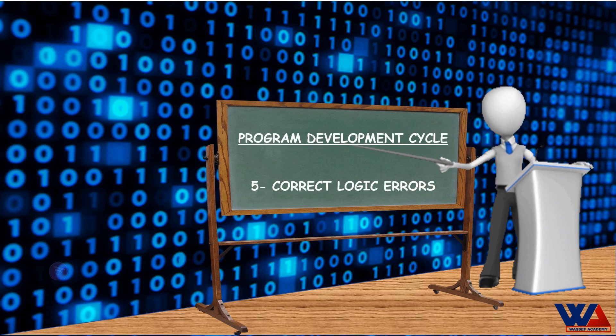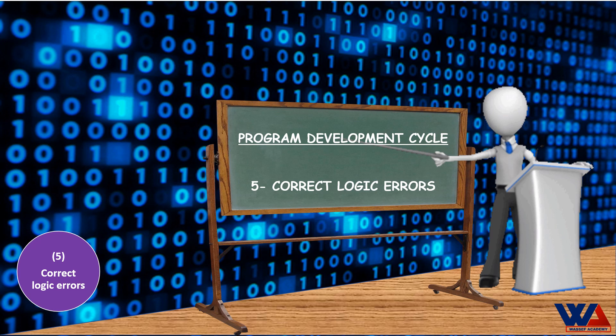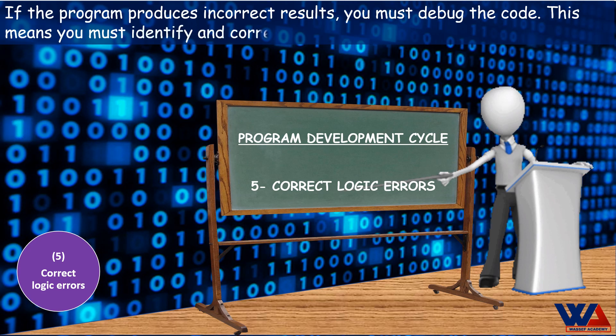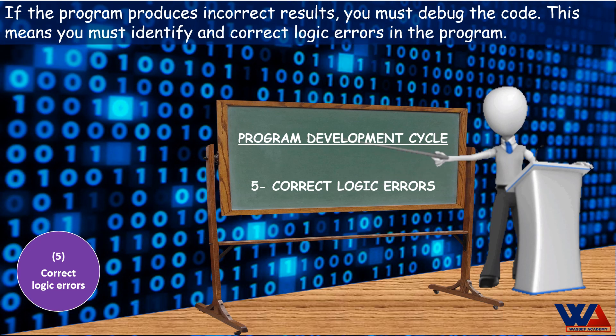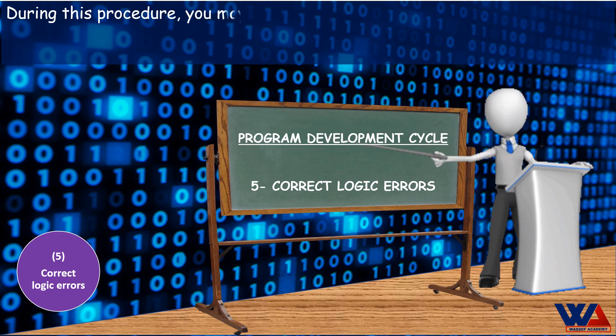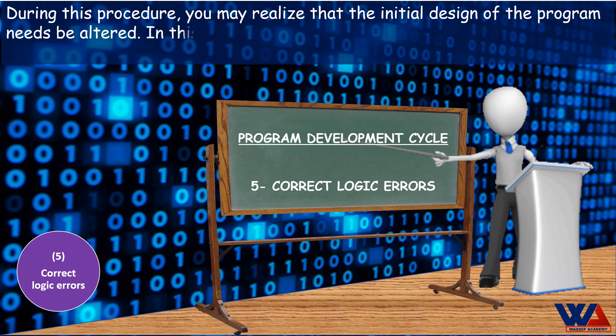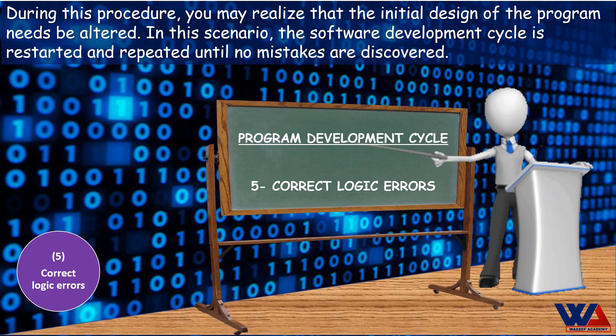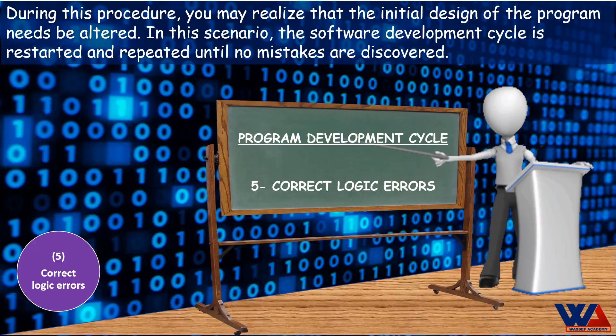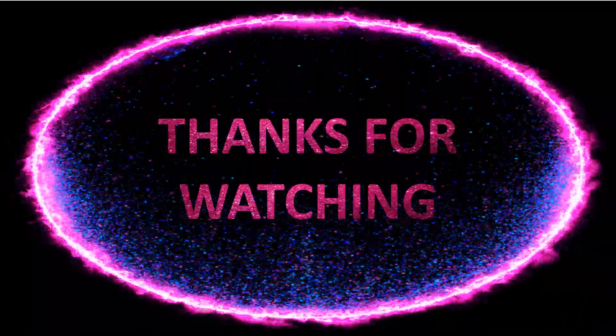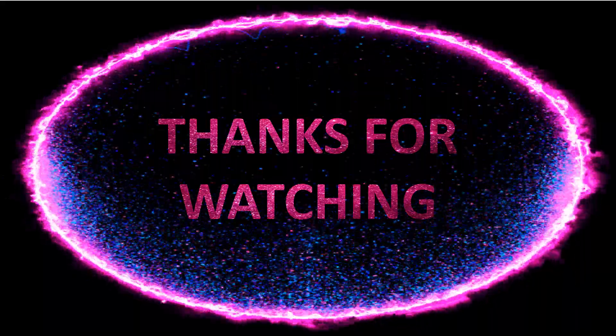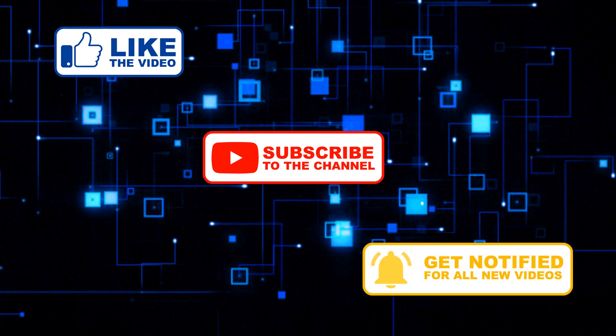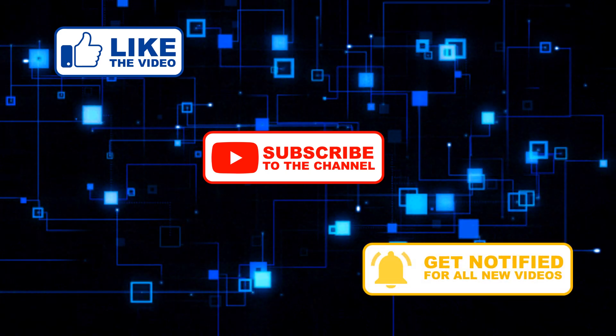Program development cycle - 5. Correct logic errors. If the program produces incorrect results, you must debug the code. This means you must identify incorrect logic errors in the program. During this procedure, you may realize that the initial design of the program needs to be altered. In this scenario, the software development cycle is restarted and repeated until no mistakes are discovered.